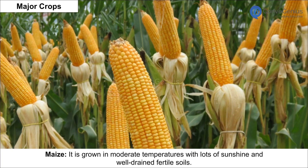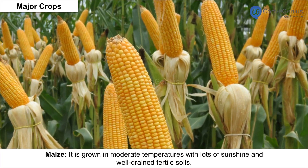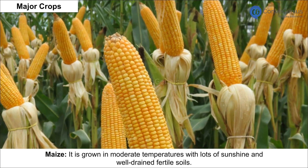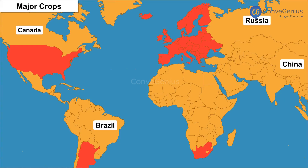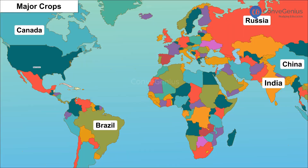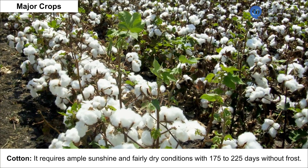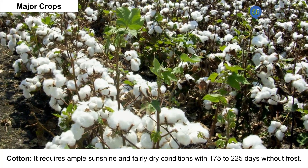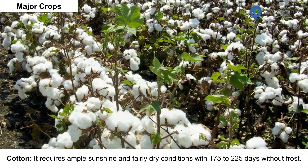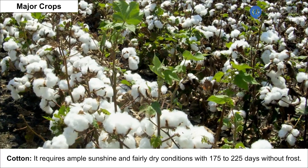Maize is grown in moderate temperatures with lots of sunshine and well-drained fertile soils. It grows best in Brazil, China, Russia, Canada, India and North America.